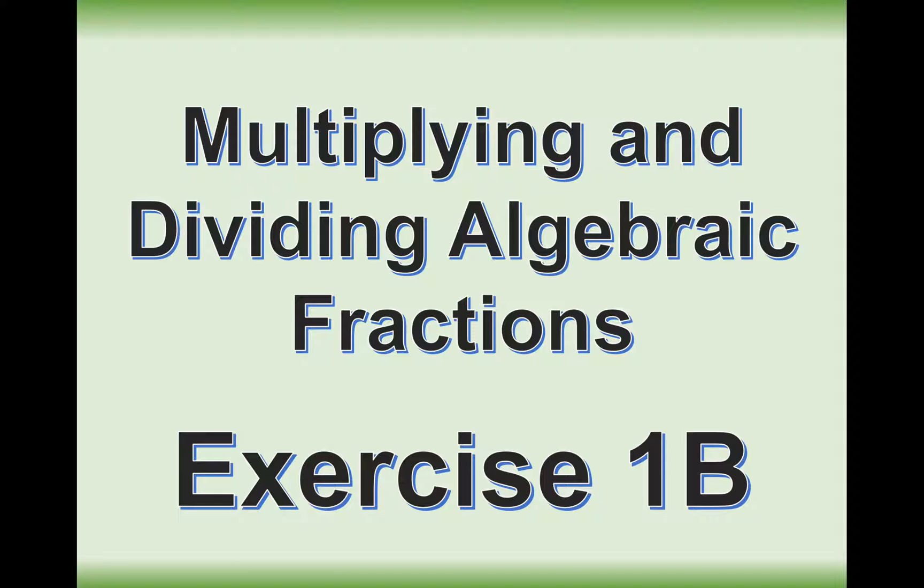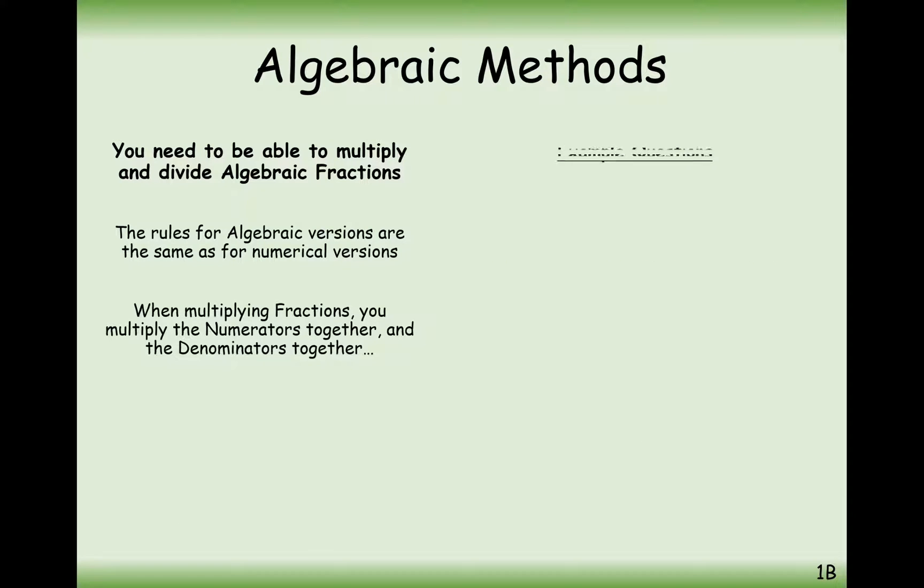So hopefully this is just a bit of revision from GCSE, shortcuts in how to multiply and divide algebraic expressions. What we've got here, let's just go through an example with numbers just to start with. If you're doing 1 half times 3 fifths, you just do top times top, bottom times bottom. So 1 times 3 is 3, 2 times 5 is 10.